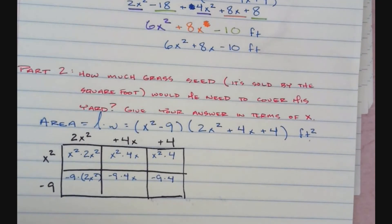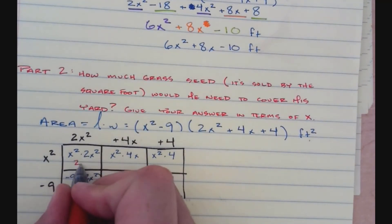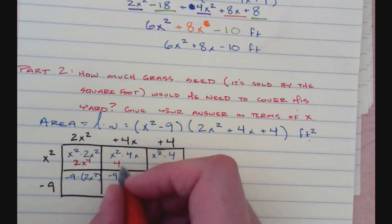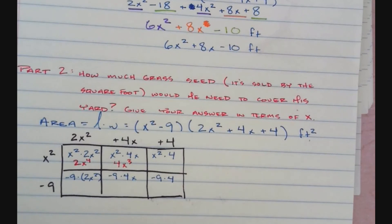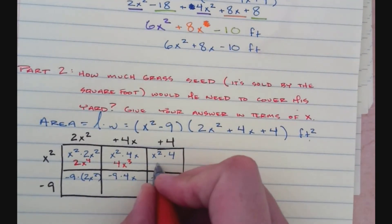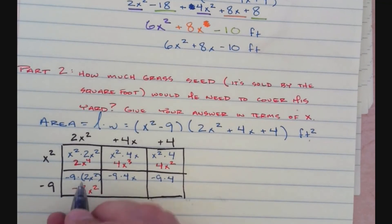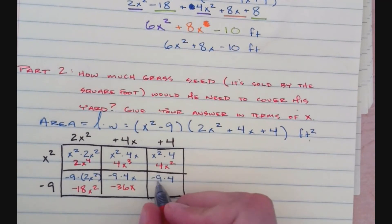I multiply rows and columns together. x squared times 2x squared gives 2x to the fourth. x squared times 4x gives 4x cubed. x squared times 4 gives 4x squared. Negative 9 times 2x squared gives minus 18x squared. Negative 9 times 4x gives minus 36x. And negative 9 times 4 gives minus 36.